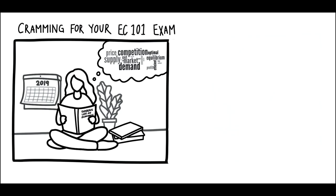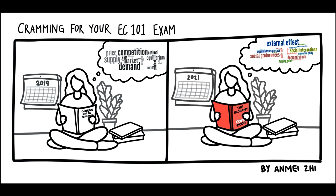It's 2019, and the student is revising for their Economics 101 exam, their head full of prices, supply and demand, competition and equilibrium. We skip across 2020, because the exams were cancelled, and go into 2021. Here's a student reading CORE's The Economy, and her head's full of external effects and social preferences. She's thinking about the economics of the COVID crisis, and thinking forward to the economics of climate change.